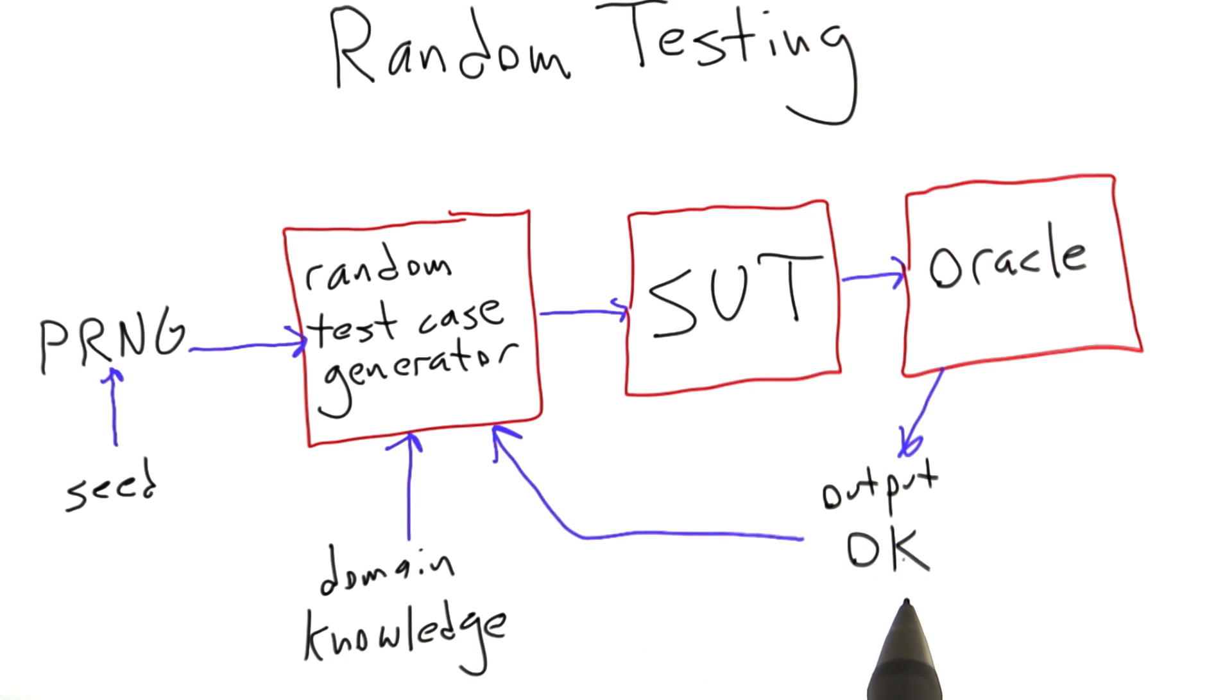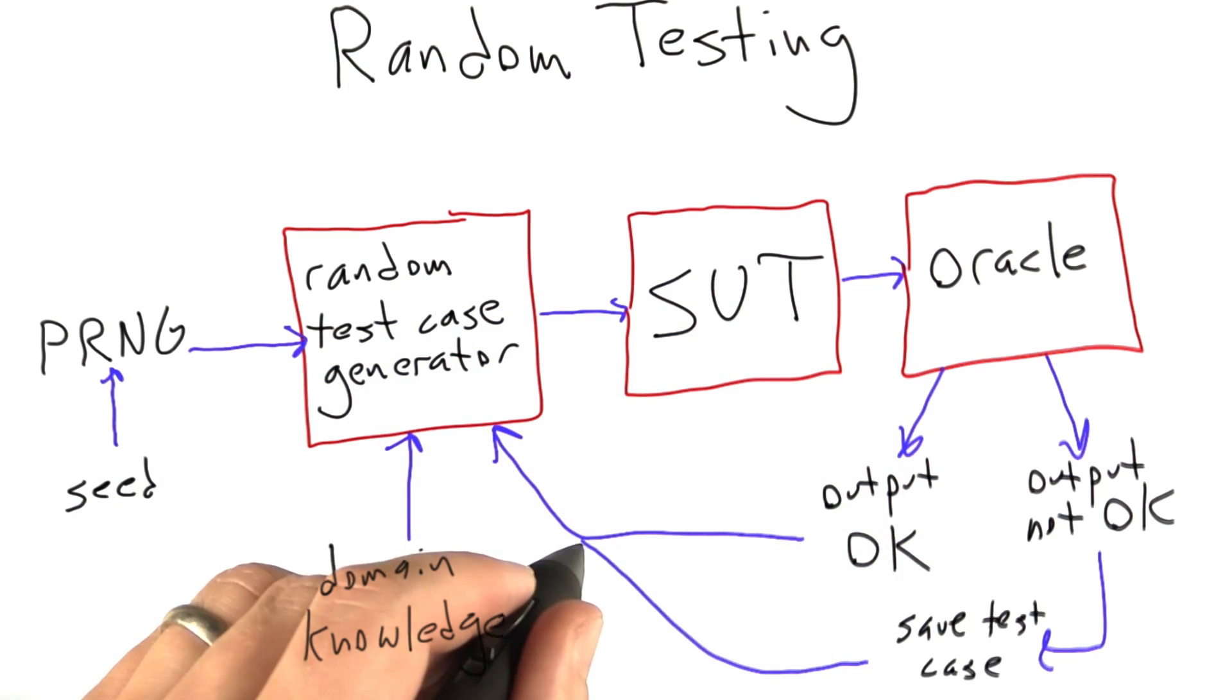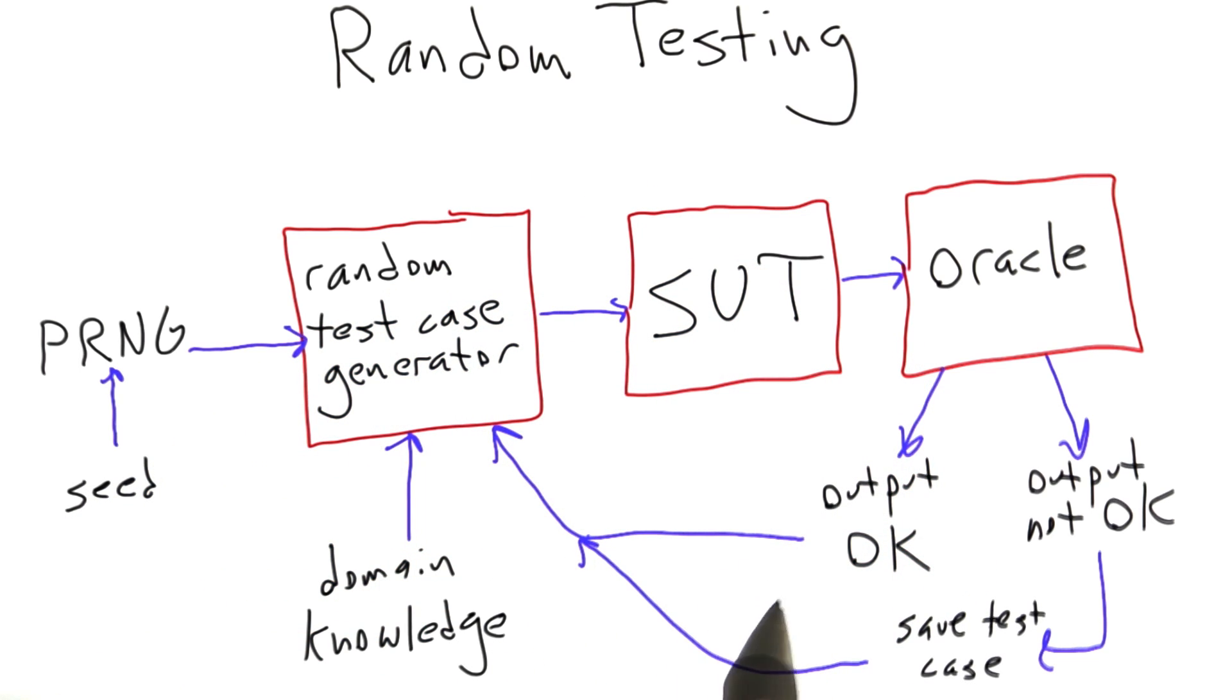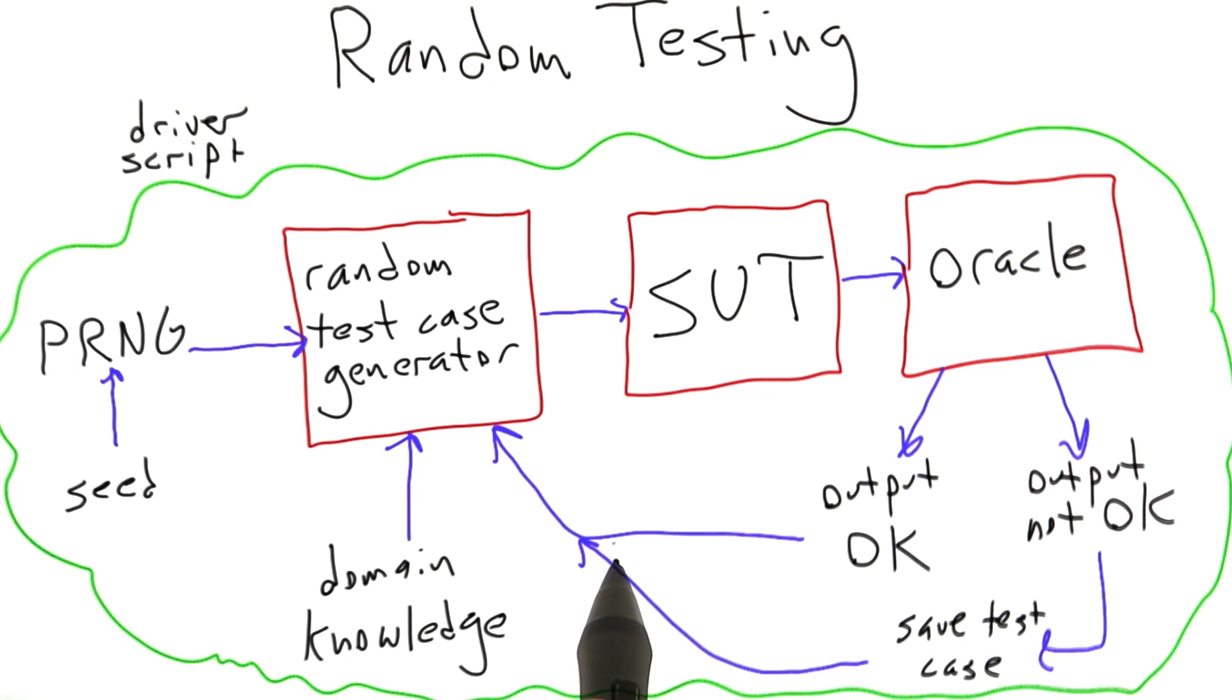On the other hand, if the output is not okay, we save the test case somewhere for later inspection and go back and do more random testing. The key to making this all work is we wrap the entire random testing tool chain in some sort of a driver script, which runs it automatically. What we do is start the random tester on some otherwise unused machine, and we go and do other things or we go home.